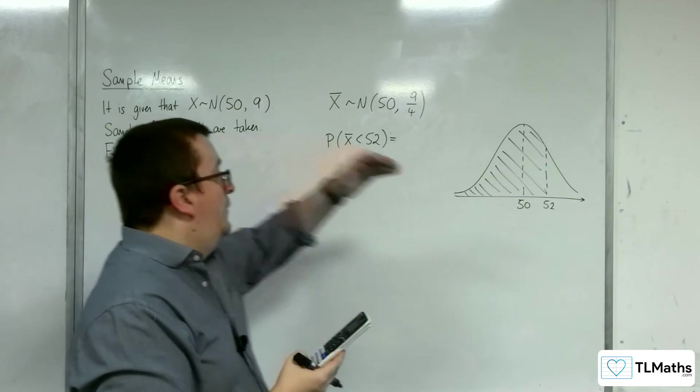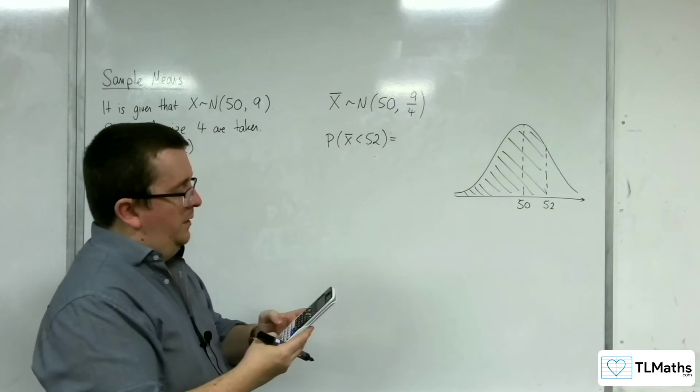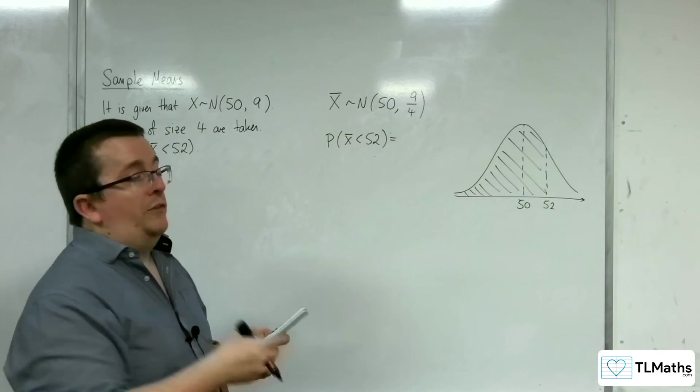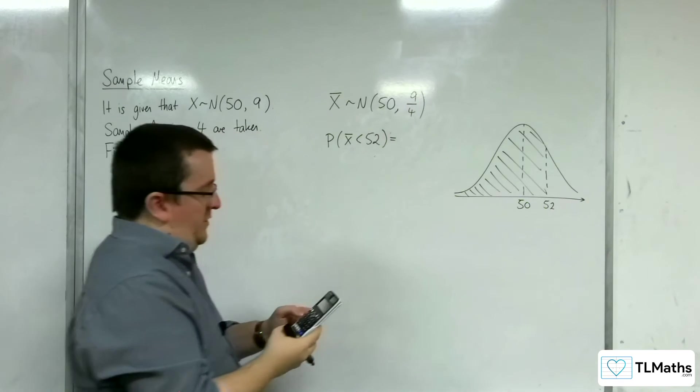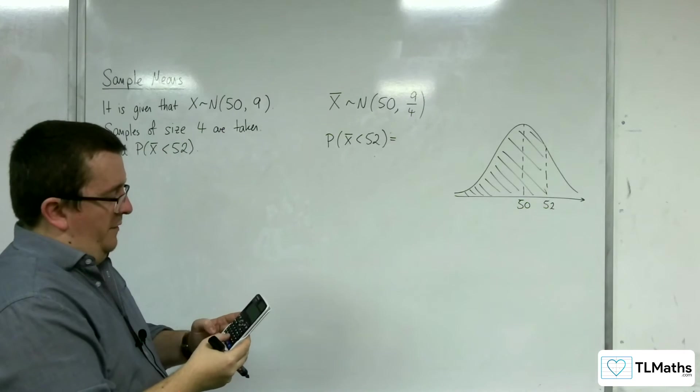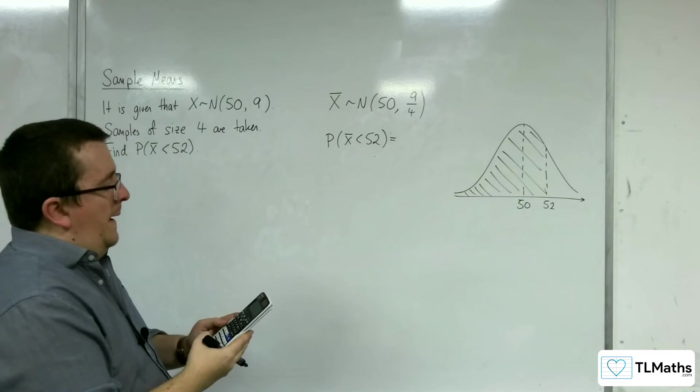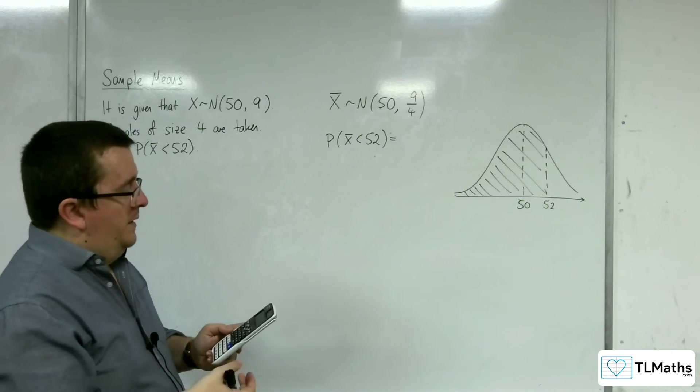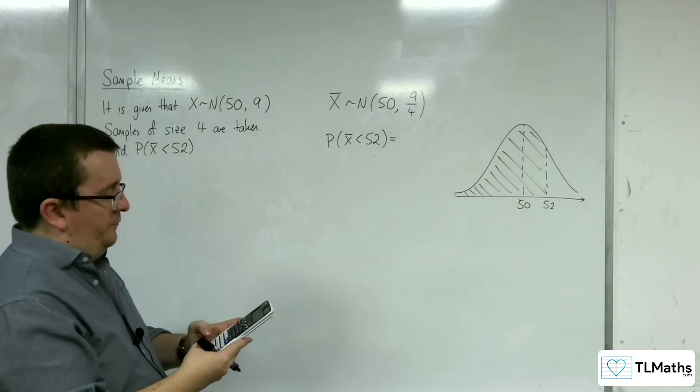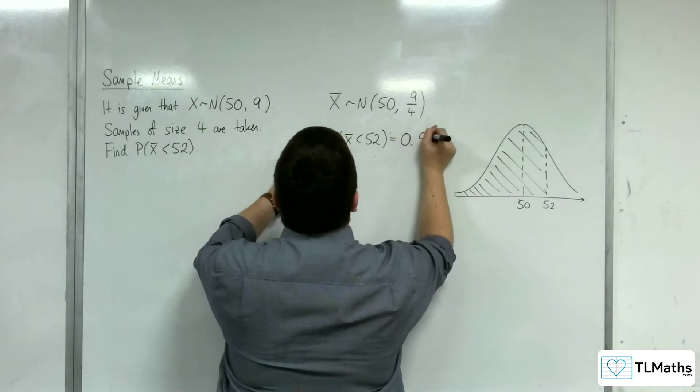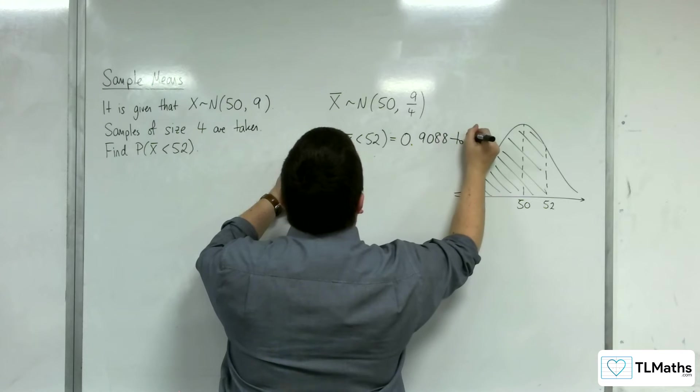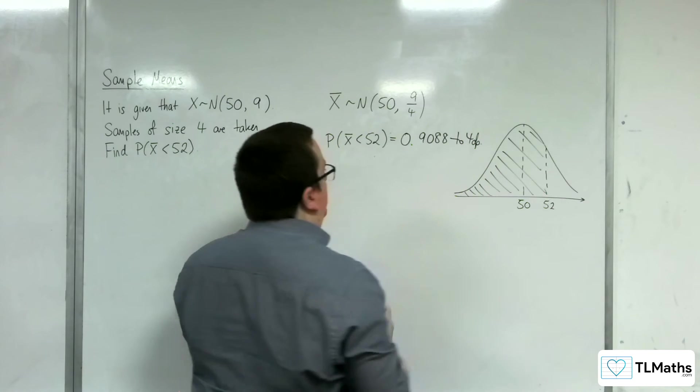The upper value is the 52. The sigma is the standard deviation, so the square root of 9 quarters. So square root of 9 divided by 4, which is 1.5, and the mean is 50. Press equals, and we should get 0.9088 to 4 decimal places.